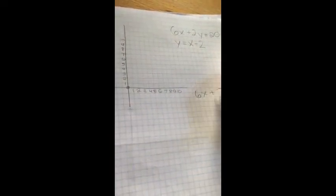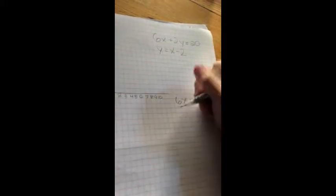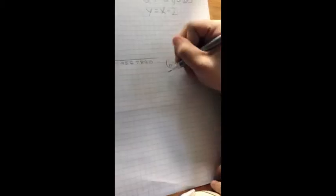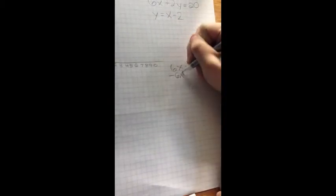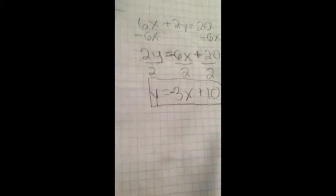6x plus 2y equals 20. In order to put the y first, we have to subtract the 6. Remember, we need to bring the 6x over to this side. We're going to take 6x away from this side and move it to the other side. I'm now left with y equals negative 3x plus 10. That's my new equation.